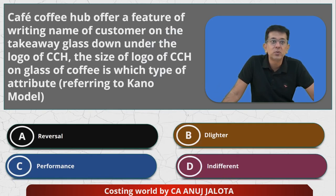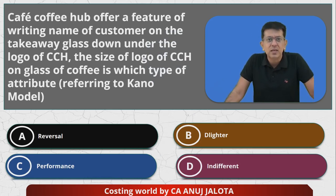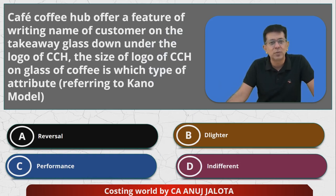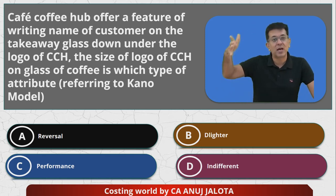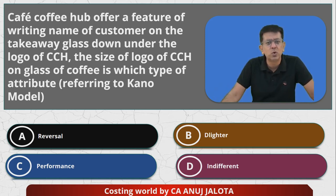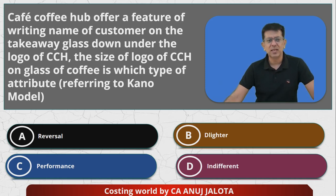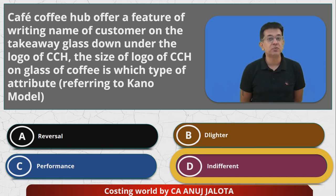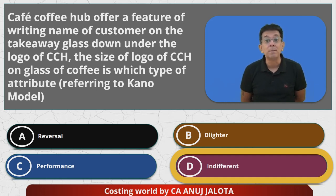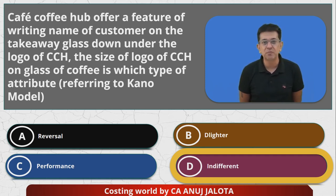Coming back to our question: the size of the logo of CCH does not matter to me at all. I'm there to drink my coffee. So the answer is D — Indifferent. Remember, the Kano model is used by companies to determine which features should be included, which excite customers, and which don't matter, helping them make better products.